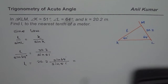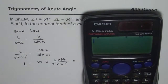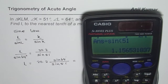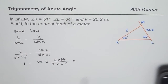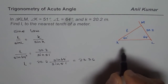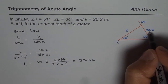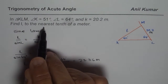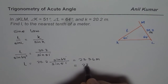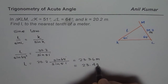Let's use the calculator to find the answer. We compute sine of 64 degrees, divided by sine of 51 degrees, then multiply by 20.2, and we get an answer of 23.36. The answer is in meters, since K is in meters. Rounding to the nearest tenth of a meter, we get 23.4 meters as our answer.